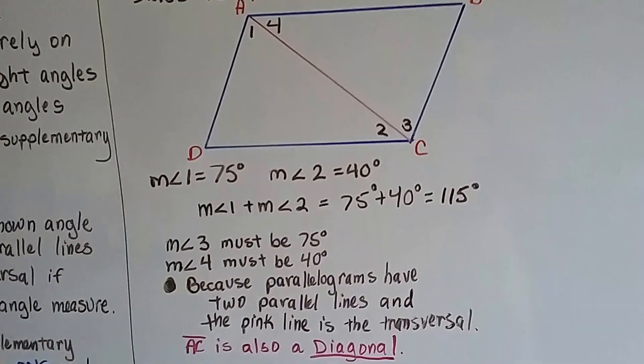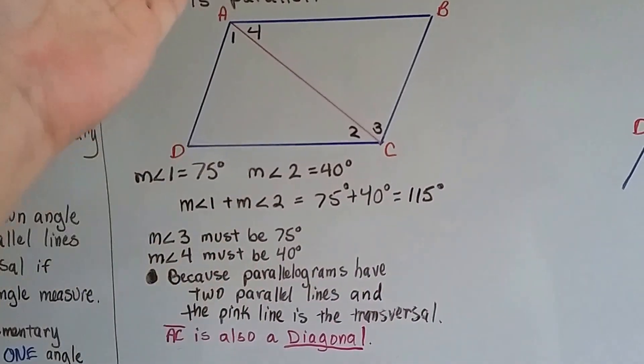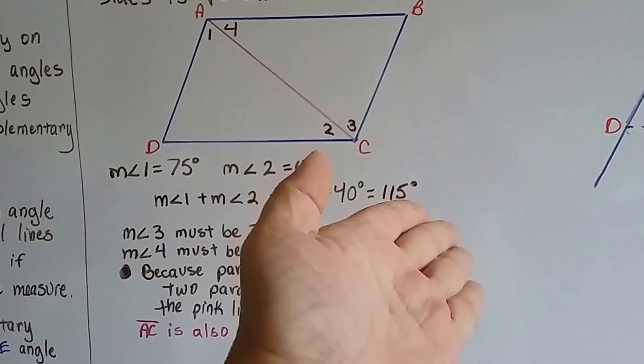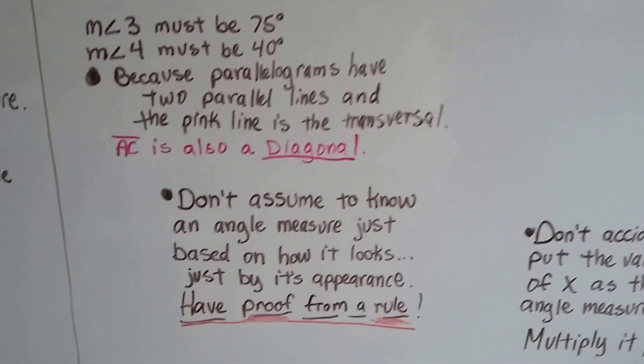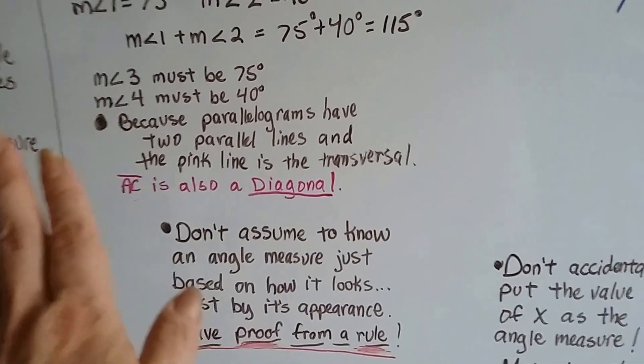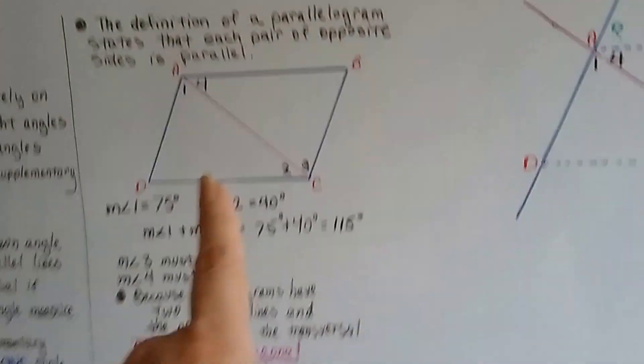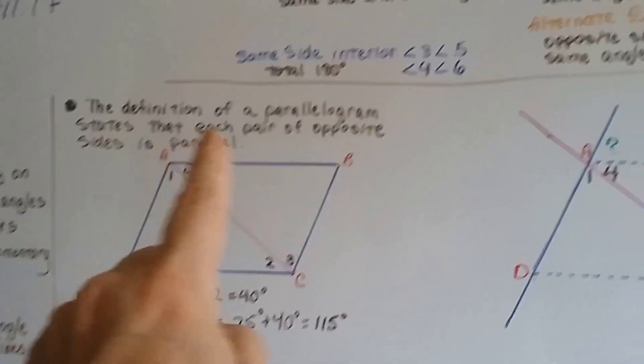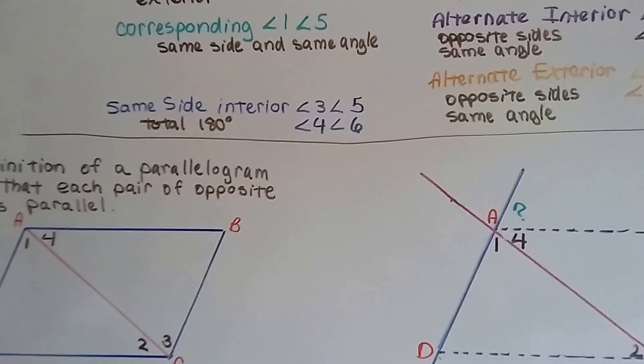Now it's also a diagonal. You're going to hear that said in geometry. That a line that is just bisecting a shape in half like that would be its diagonal. Well, don't assume these angle measures. Make sure you have proof. Make sure you have a definition to back you up or some rule like corresponding angles.